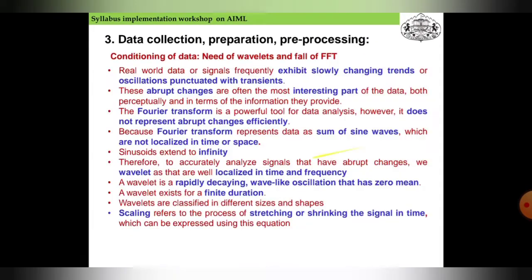How we use the conditioning of data with wavelets and FFT: real world data or signals frequency exhibits slowly changing trends or oscillations punctuated with transients. These abrupt changes are often the most interesting part of the data both perceptually and in terms of the information they provide. The Fourier transform is a powerful tool for data analysis, however it does not represent abrupt changes efficiently because Fourier transform represents data as sums of sine waves which are not localized in time or space.